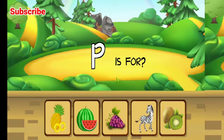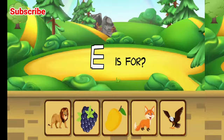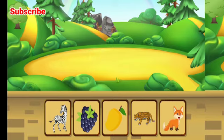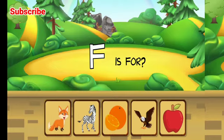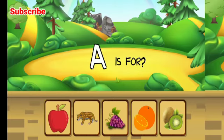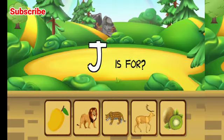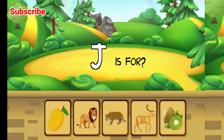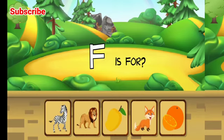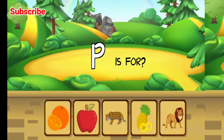Pineapple, fantastic. D is for eagle, awesome. J is for jaguar, great job. F is for fox, awesome. S is for strawberry, excellent. A is for apple, awesome. J is for jaguar, correct. D is for eagle, excellent. F is for fox, awesome. P is for pineapple, correct.